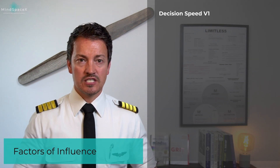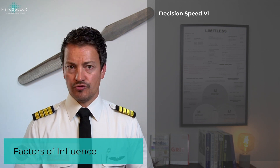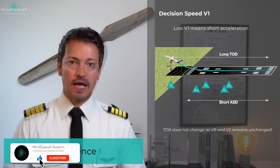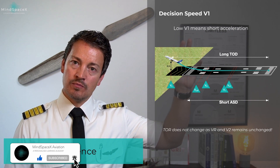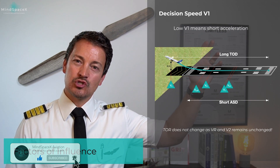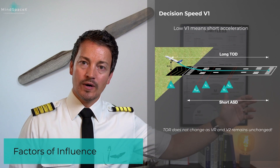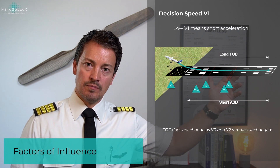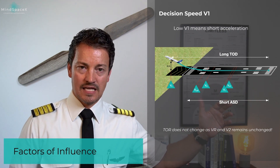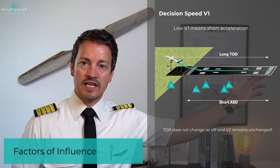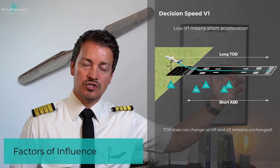The decision speed can be changed to fit the performance that we need. A low V1 value means that you have a short acceleration. Short acceleration means short acceleration and stop distance. The accelerate-stop distance right here is short because a low V1 means you make a decision very soon.